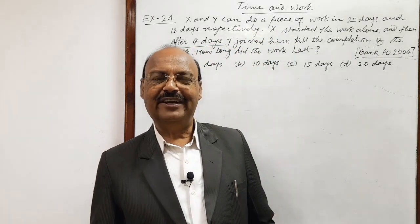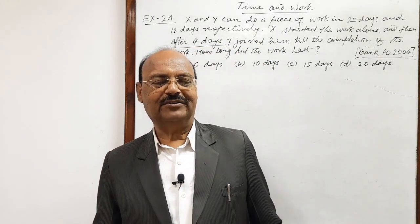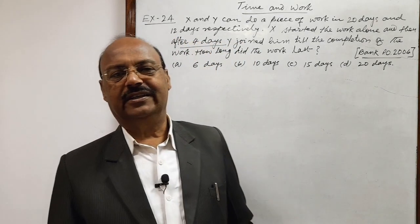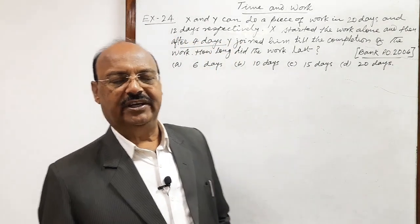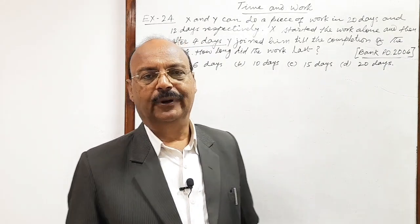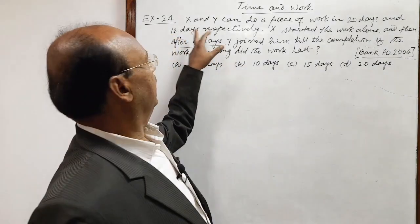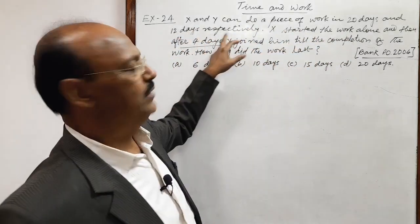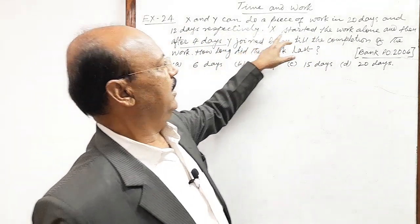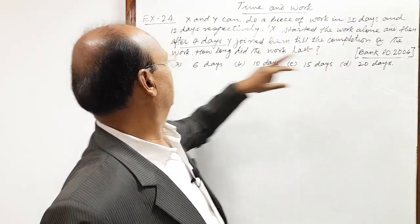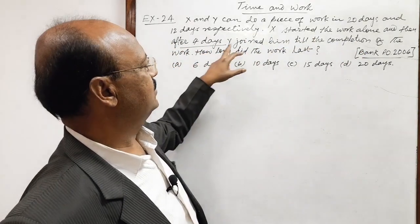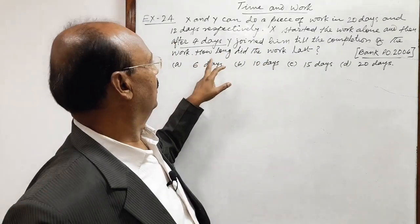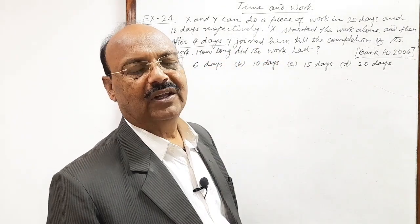Welcome students. Let us see a very important question from the topic time and work. This question has been asked in the bank's Probationary Officer Examination in the year 2004. The question is: X and Y can do a piece of work in 20 days and 12 days respectively. X started the work alone and then after 4 days Y joined him till the completion of the work. How long did the work last?